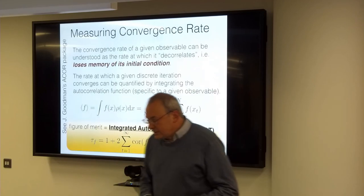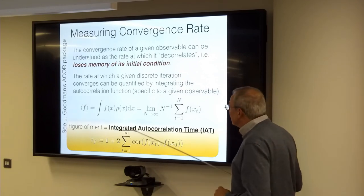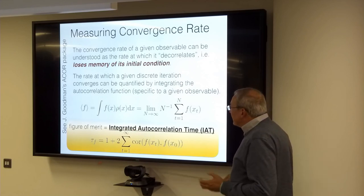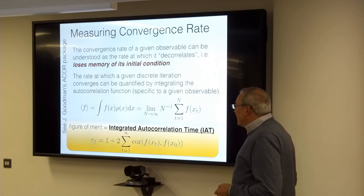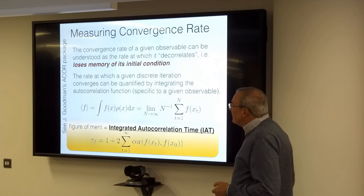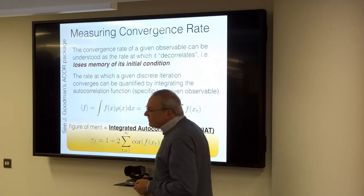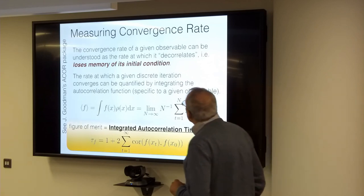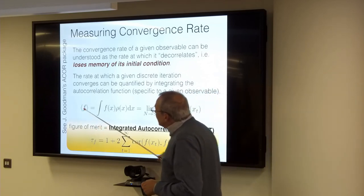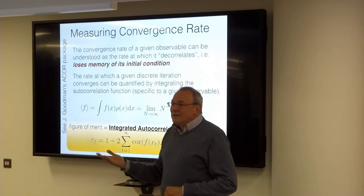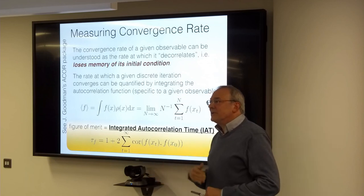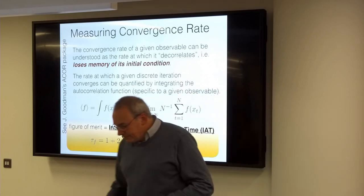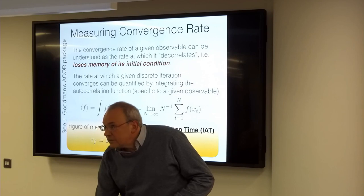One way to quantify convergence is the integrated autocorrelation time — how rapidly a particular observable decorrelates. There's a nice code by Jonathan Goodman called the ACOR package with a Python translation. You put in your data and it calculates the integrated autocorrelation time and gives you a number back. That's a way to quantify convergence.